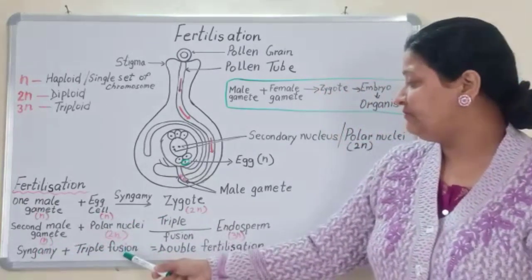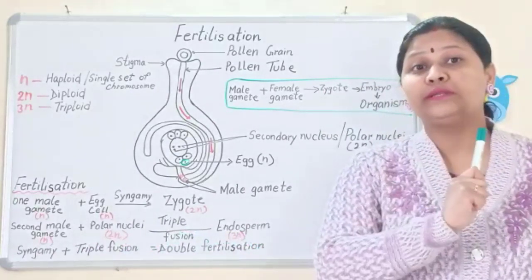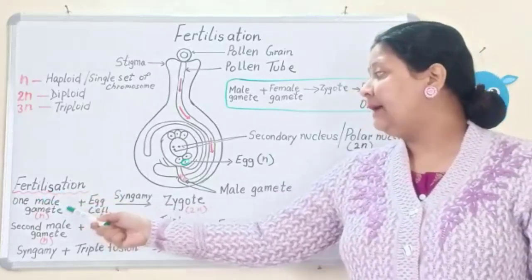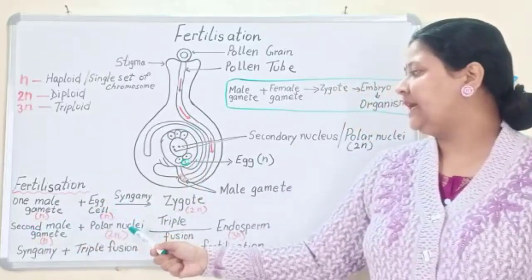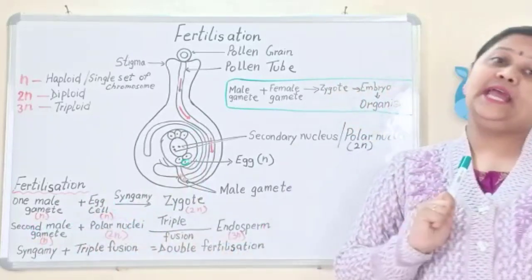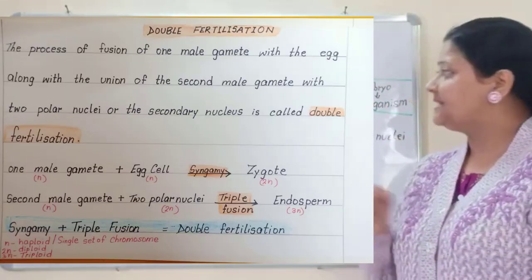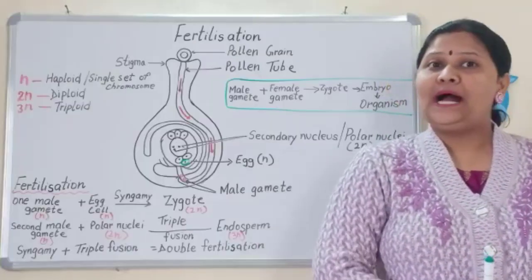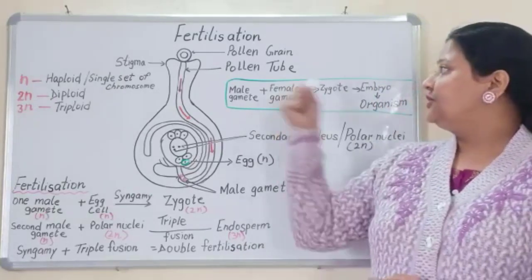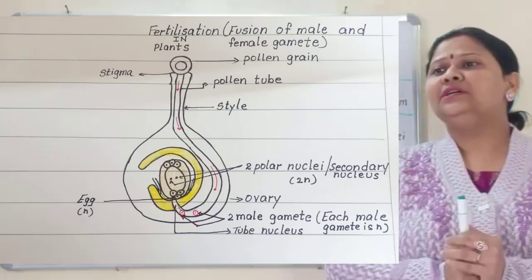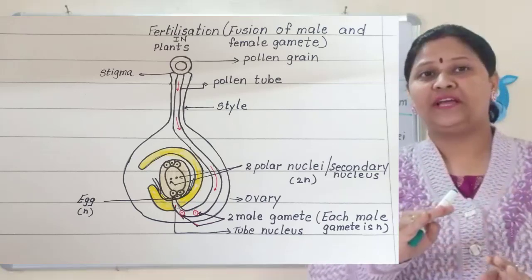Syngamy plus triple fusion is double fertilization. We call it double fertilization because: in the first fertilization, one male gamete fuses with the egg cell to give the zygote (2N); in the second fertilization, the second male gamete fuses with the polar nuclei to give the endosperm (3N). So fertilization takes place two times — that is why it is known as double fertilization.